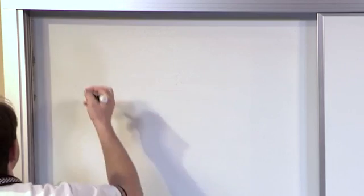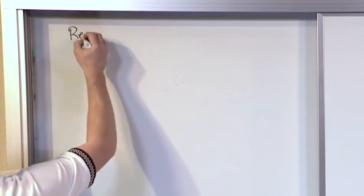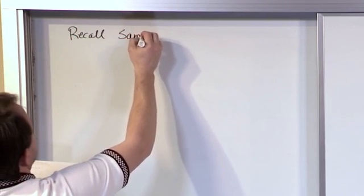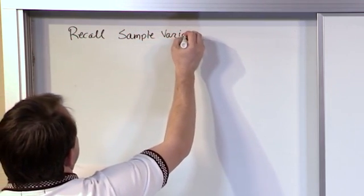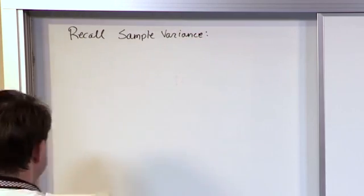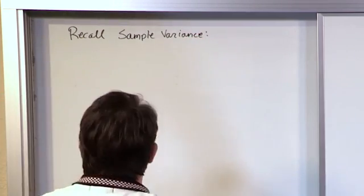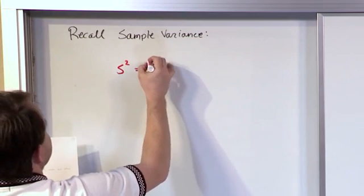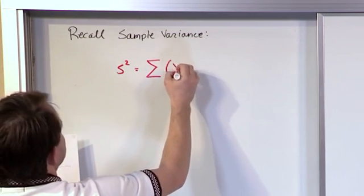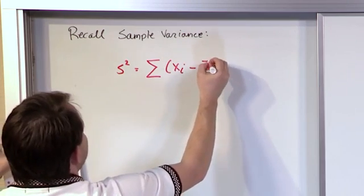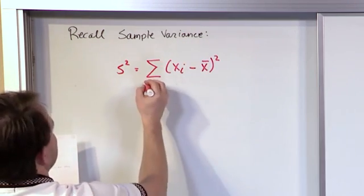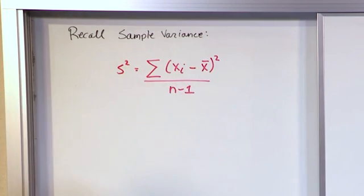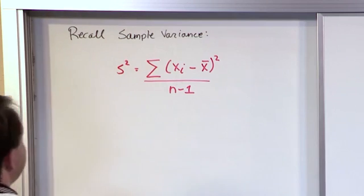Now recall, I will say recall, we've already learned the sample variance. The sample variance, and that I will change colors for, was denoted s squared is the sum of the data points minus the average value squared over n minus 1. We've done that before. We understand that.